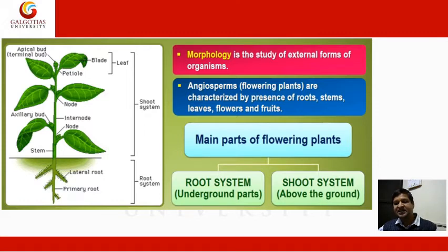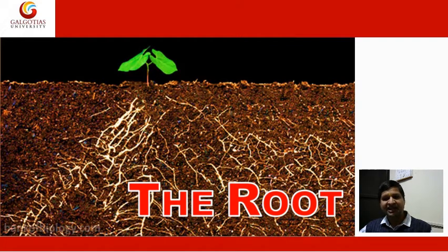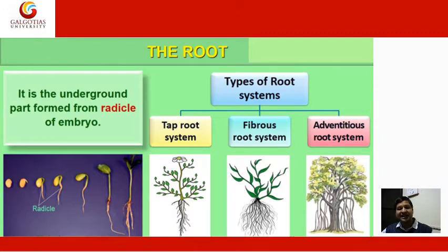In the root system we will see the underground parts, and in the shoot system we will discuss the above-ground parts. The root is the underground part formed by the radicle of the embryo. If you will see the image, I have a mark or tag showing where the radicle is.